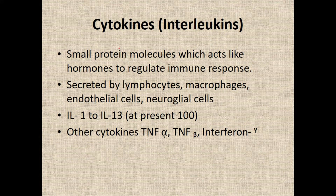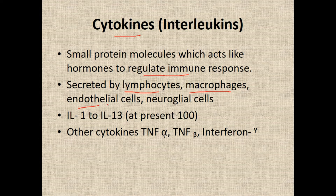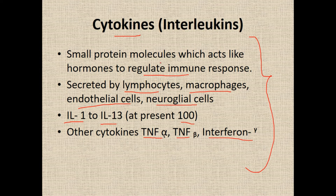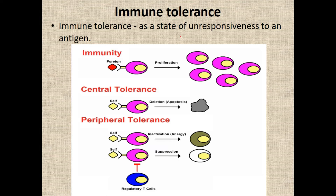Cytokines or interleukins are small protein molecules which act like hormones to regulate immune response. They are secreted by lymphocytes, macrophages, endothelial cells, and neuroglial cells in the brain. Interleukin 1 to interleukin 13 are well known, but at present there are 100 interleukins. Other cytokines include tissue necrosis factor alpha, tissue necrosis factor beta, and interferon gamma. These are all cytokines and interleukins — small protein molecules which act like hormones to regulate the immune response.